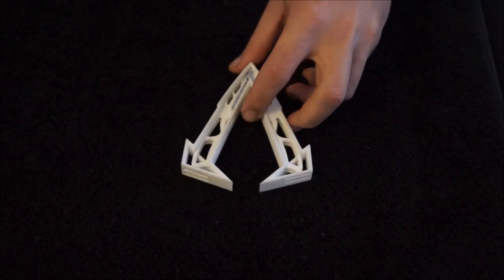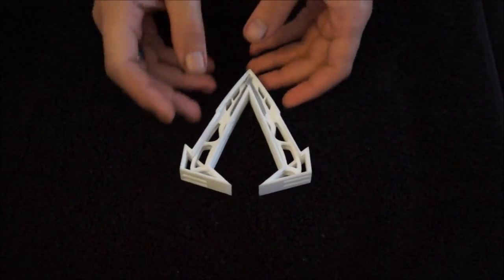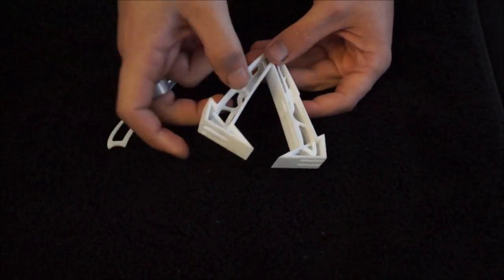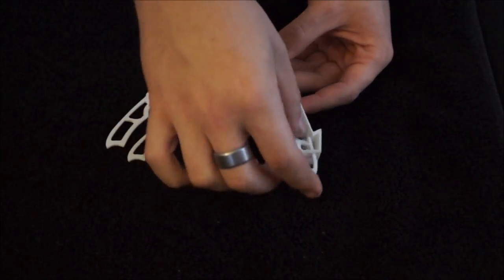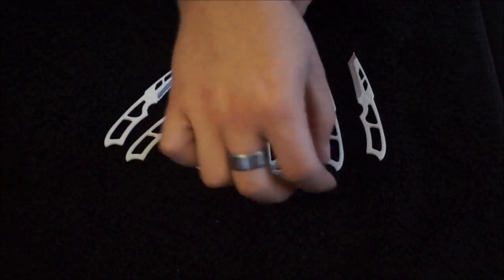However, the smaller version maintains the same functionality as the larger version in the sense that it stores some hidden knives here in each leg. There's two per side, giving you a total of four.